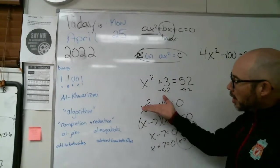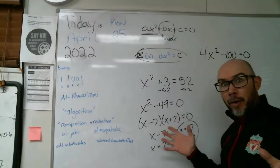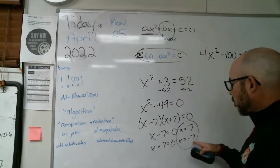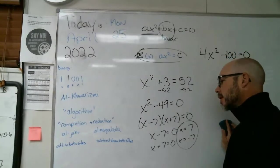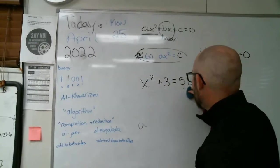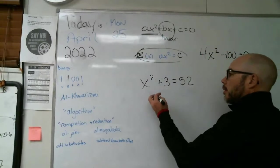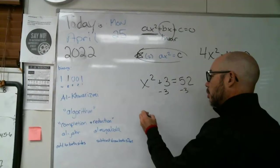We could put it over there. We notice the difference of two squares. We've been doing that forever. And when we get our two answers or two solutions, seven and negative seven, graph it, you can see that that would be true. Another way to do that would be to move that three to the other side, and then finish it off by taking the square root of both sides.